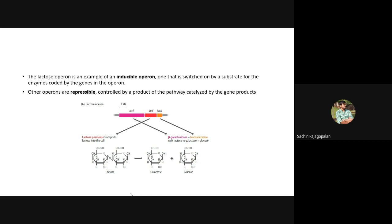Lac Z, lac Y, and lac A are the three genes in the lac operon. Lac Z codes for the important enzyme beta-galactosidase, which is responsible for the actual breakdown of lactose into glucose and galactose. Lac Y codes for an enzyme called lactose permease, which is essential to transport lactose inside the cell, because lactose is present outside in the external environment and must first be taken inside.